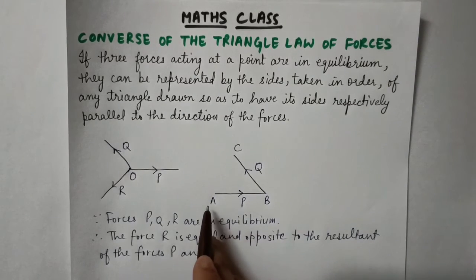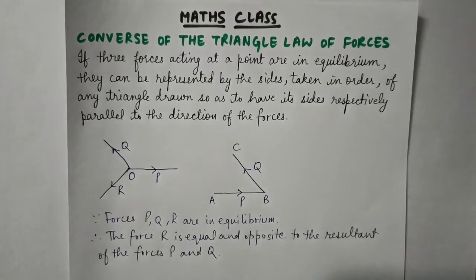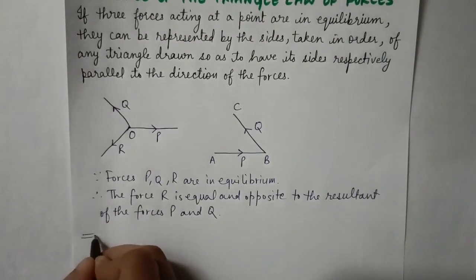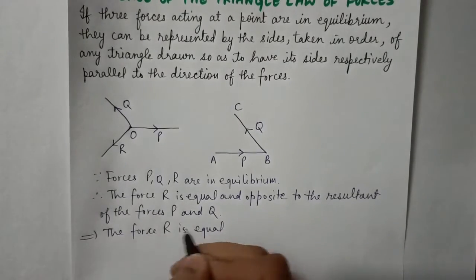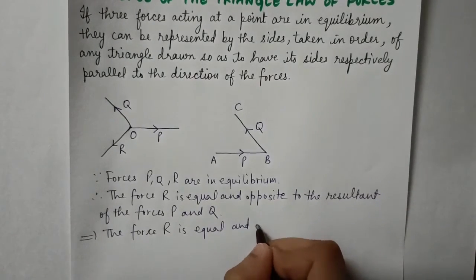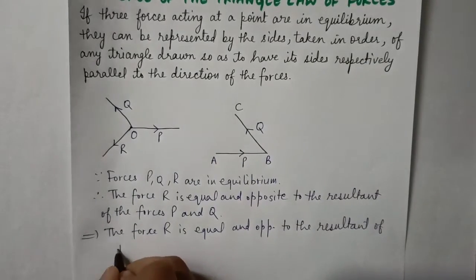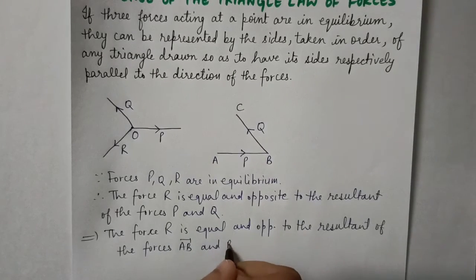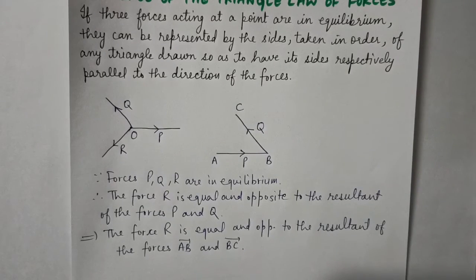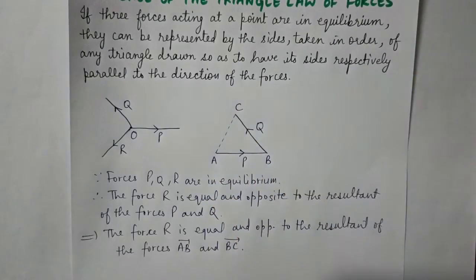Since P force is represented by vector AB and Q force is represented by vector BC, we can rewrite and state that force R is equal and opposite to the resultant of forces AB vector and BC vector. To find the resultant of forces AB and BC, we need to complete the triangle, so let us join the points A and C.